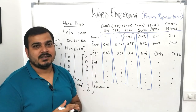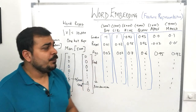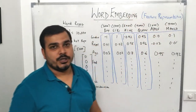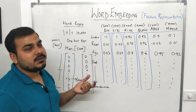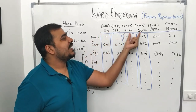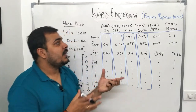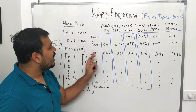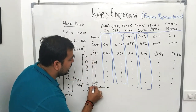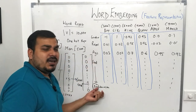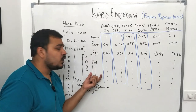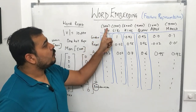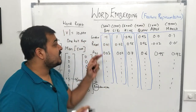To overcome this disadvantage, there is a concept called word embedding. In word embedding there is a concept of feature representation. We take all 10,000 words — like boy, girl, king, queen, apple, mango — and try to convert them into vectors based on some features. These features could be things like gender, royal, age, food, and others — somewhere around 300 features total.